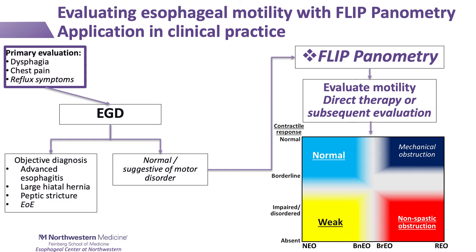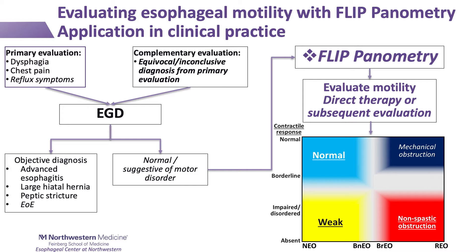So how can this be applied in clinical practice? FLIP can be utilized, potentially as a manometry alternative, as part of the EGD that would entail the initial diagnostic test for esophageal symptoms. If an objective diagnosis is reached on endoscopy — such as reflux esophagitis, a large hiatal hernia, stricture, or EoE — a clinical diagnosis is reached and management can be targeted.